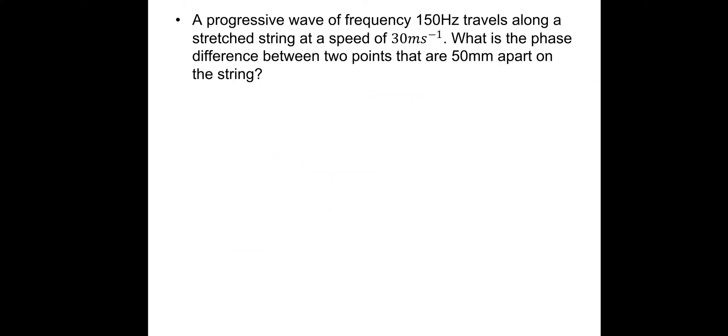In this one we've got a progressive wave of frequency 150 hertz travels along a stretched spring at a speed of 30 m/s. What is the phase difference between two points that are 50 millimeters apart on the string? We've got the frequency 150 hertz, speed of 30 m/s. What we need is the wavelength. The wavelength equals V over F. So that's 30 m/s divided by 150 hertz, which gives us a wavelength of 0.2 meters.